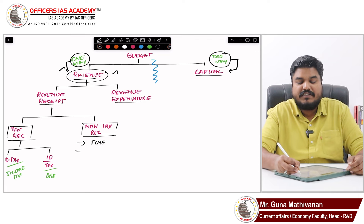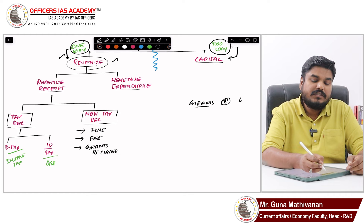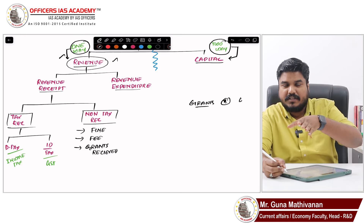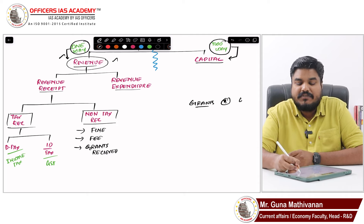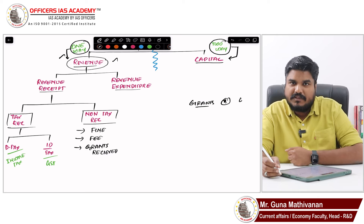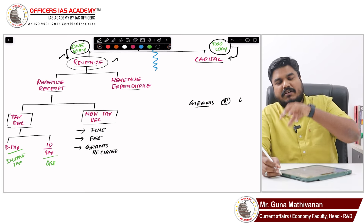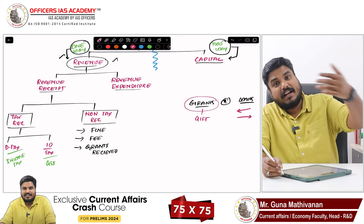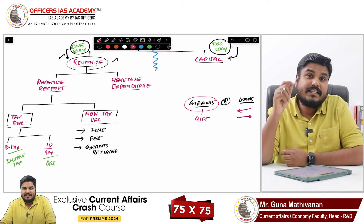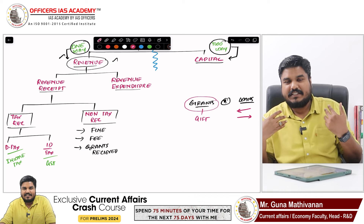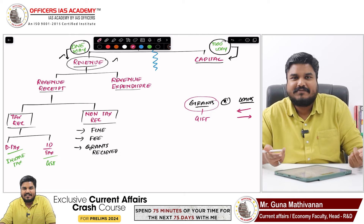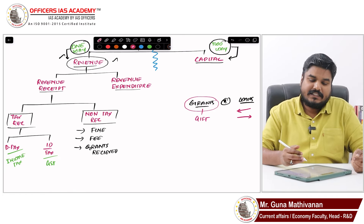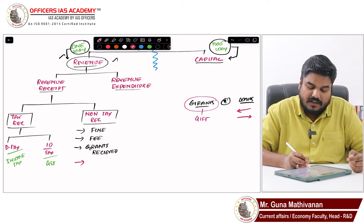Grants received are also part of non-tax receipts. Grants are different from loans — loans are borrowings that you have to give back, but a grant is like a gift. If one country gives a grant to another country, it will not be given back. So when India receives a grant, the government is not going to give it back. Grants received are therefore a one-way transaction under non-tax receipts.